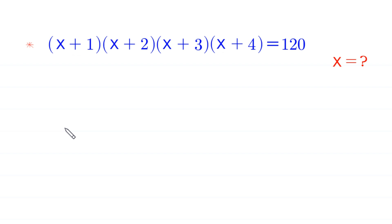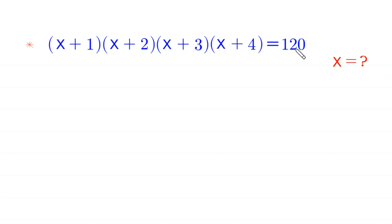Hello everyone, you are welcome. We will solve this very nice algebra equation: (x+1)(x+2)(x+3)(x+4) = 120. Our job is to find all possible values of x.